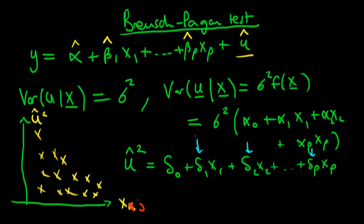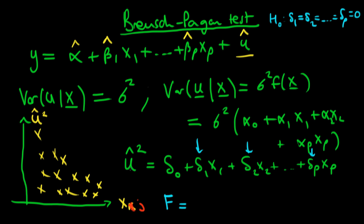We could do a t-test on any of these coefficients if we were just interested in heteroskedasticity along one variable. But in general, we don't really care what's causing the heteroskedasticity — although it might be informative for what to include in our model to remove it. So our null hypothesis is that we have homoskedastic errors, which in this auxiliary regression means delta_1 = delta_2 = ... = delta_p = 0. That would be the case whereby my residuals or errors weren't dependent on my x terms.